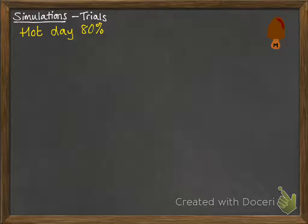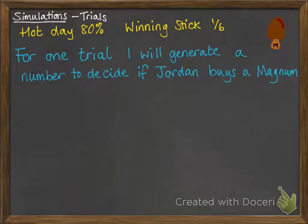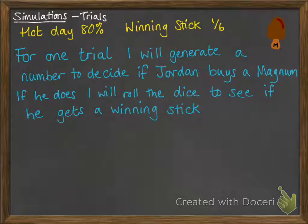One trial will look at deciding whether the day is hot enough — that's the 80% — and then deciding whether he gets a winning stick if he does buy an ice cream. We will generate a number to decide if Jordan buys a Magnum, and if he does, we'll then roll the dice to see if he gets a winning stick.